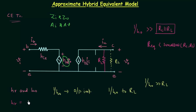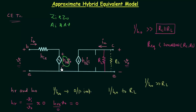hr is the reverse voltage gain, which equals input voltage divided by output voltage. Since we use the transistor for amplification, the output voltage vo is greater than the input voltage vi, so the numerator is smaller and the denominator is larger, making hr nearly equal to zero. Because of this, the voltage hrvo — or hre·vo for common emitter — is also equal to zero. So we can replace this voltage dependent voltage source with a short circuit.